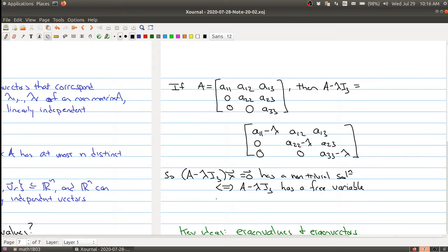And we can make the system have a free variable if we let lambda equal a11, a22, or a33. For example, if I put a33 in here, then I would have a zero here, and I would be introducing a free variable in that spot.